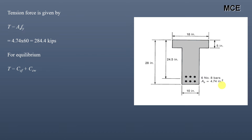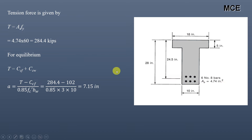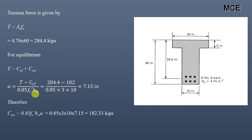For equilibrium, the tension force equals the sum of compression forces: T = Ccf + Ccw. Solving for A: A = (T − Ccf) / (0.85 × f'c × bw). Substituting values gives A = 7.15 inches — this is the depth of the stress block. Substituting A back into the Ccw equation gives the compression force in Beam W equal to 182.33 kips.